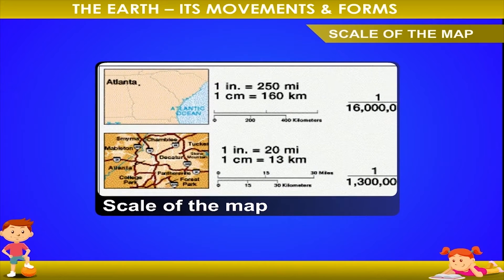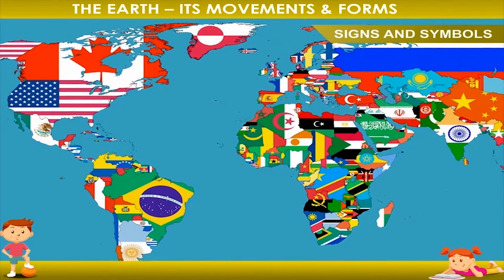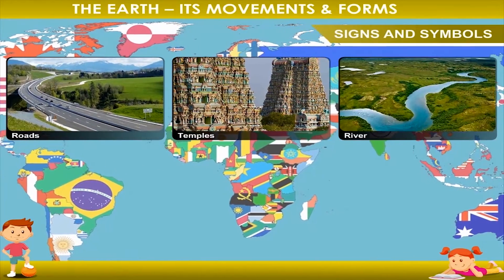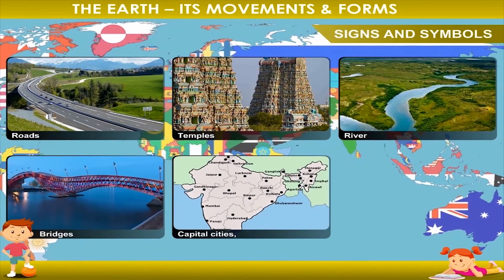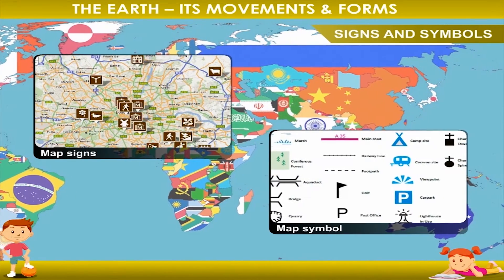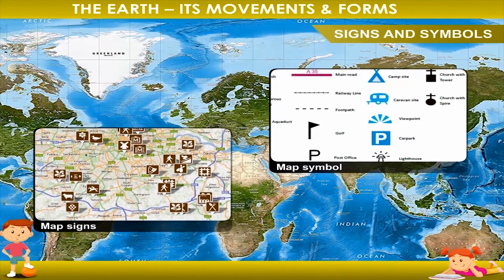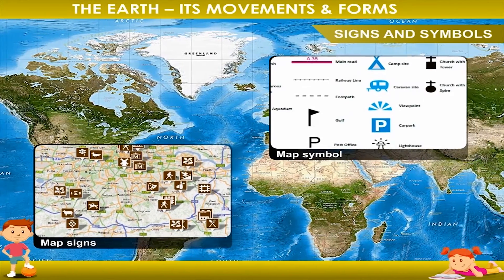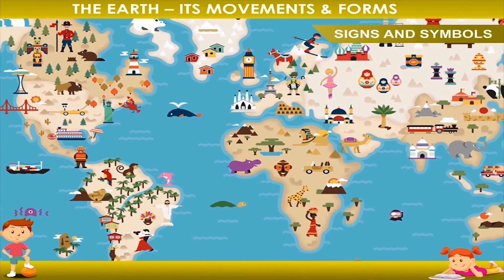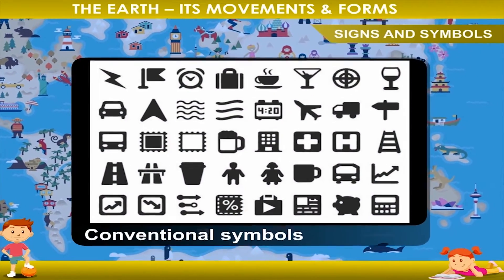The bar divided into equal distances shows the scale of the map. Signs and Symbols: Maps help us to know various features like roads, temples, rivers, bridges, capital cities, states, and railway lines. Certain signs and symbols are used to denote these places. These signs and symbols help us to read and understand the information on a map. The colors and symbols used in the map are universal, meaning the same sets of symbols and colors are used as conventional symbols.